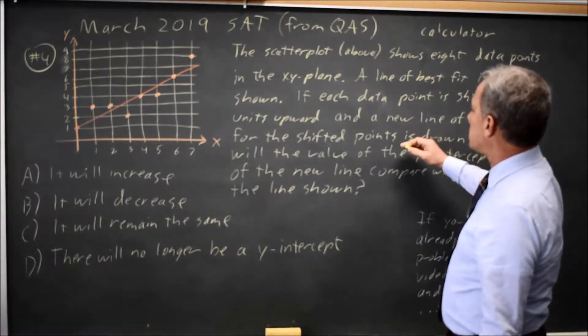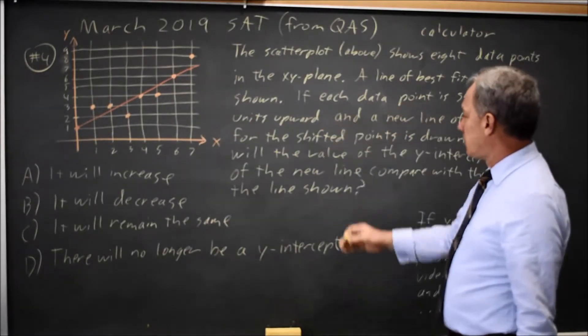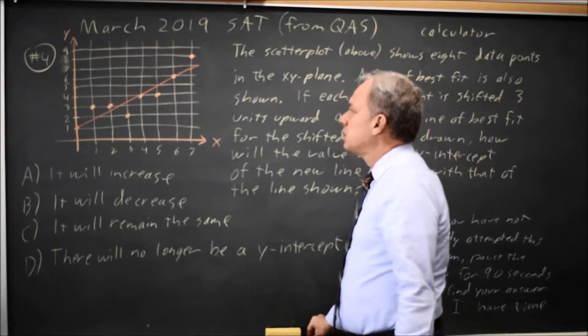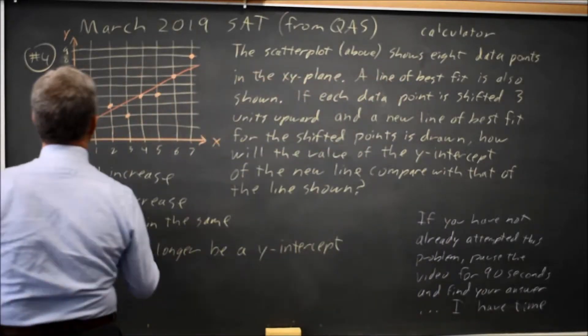if each data point is shifted three units upward, what happens to the y-intercept of the new line of best fit? So let's shift each data point three units upward.